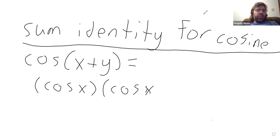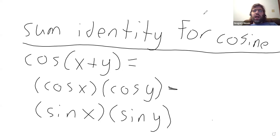Sorry, that was a typo. So the cosine of x plus y is the cosine of x times the cosine of y minus the sine of x times the sine of y.